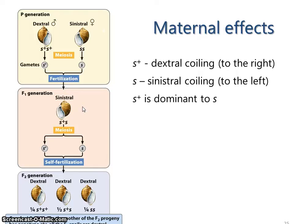When an individual is producing eggs during oogenesis, it is going to be putting gene transcripts or RNA transcripts — gene products — into the egg. These transcripts are going to influence the direction of coiling such that an individual in the female role producing eggs that only have the S transcript in them will result in sinisterly coiled offspring.